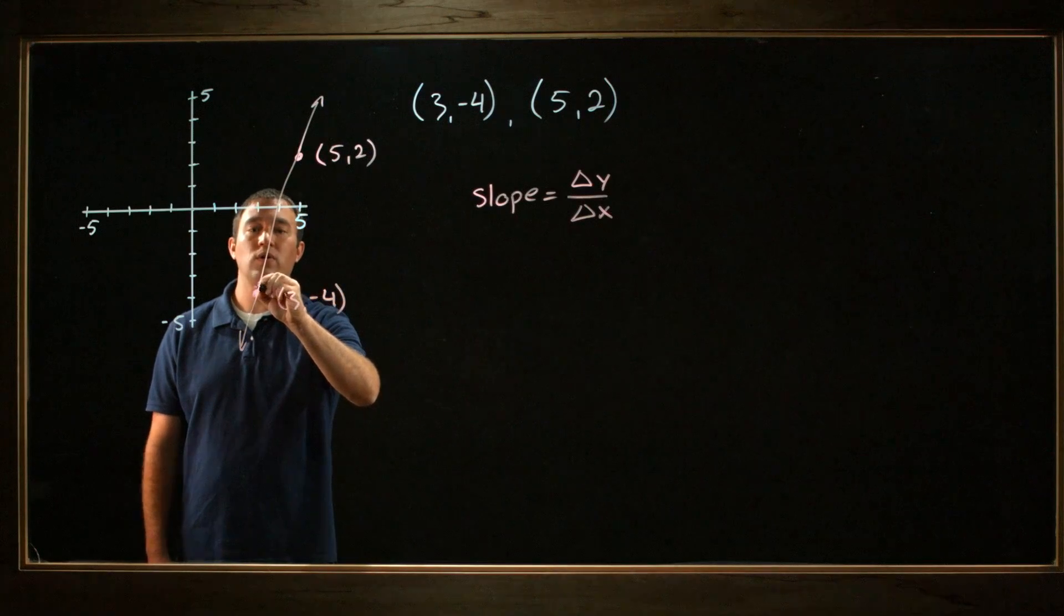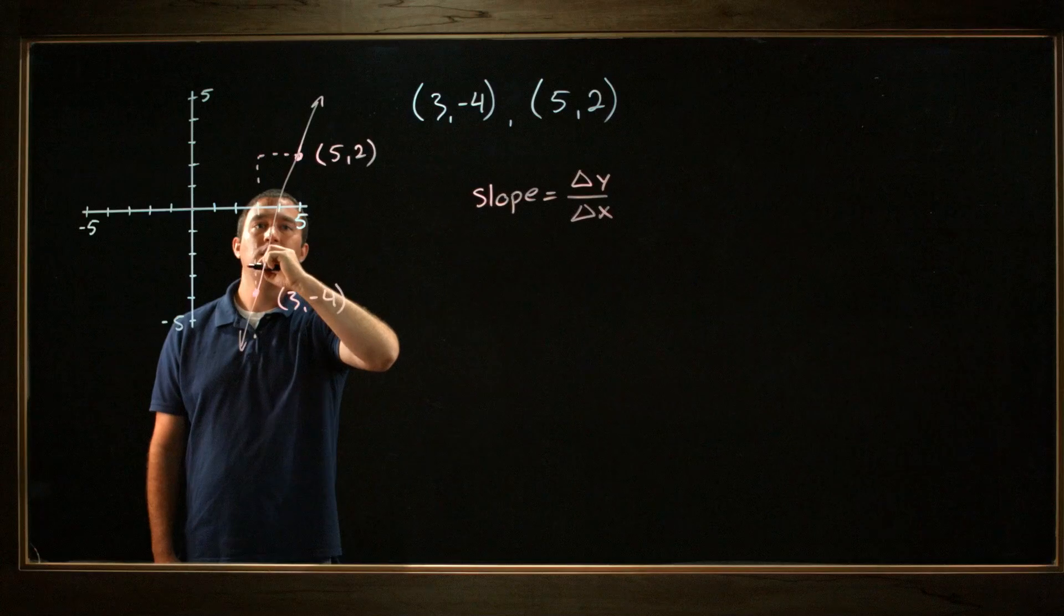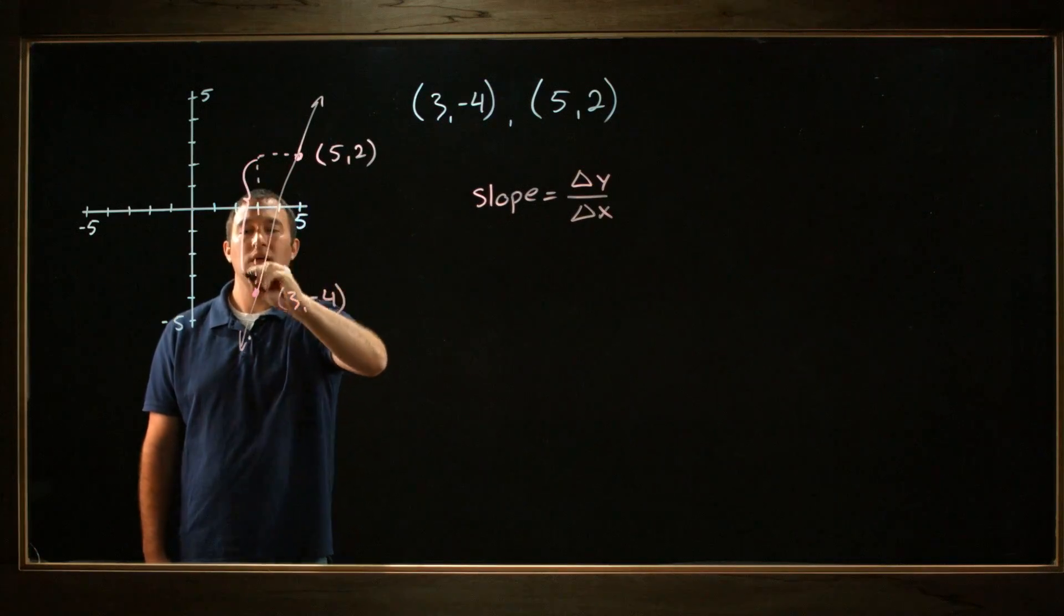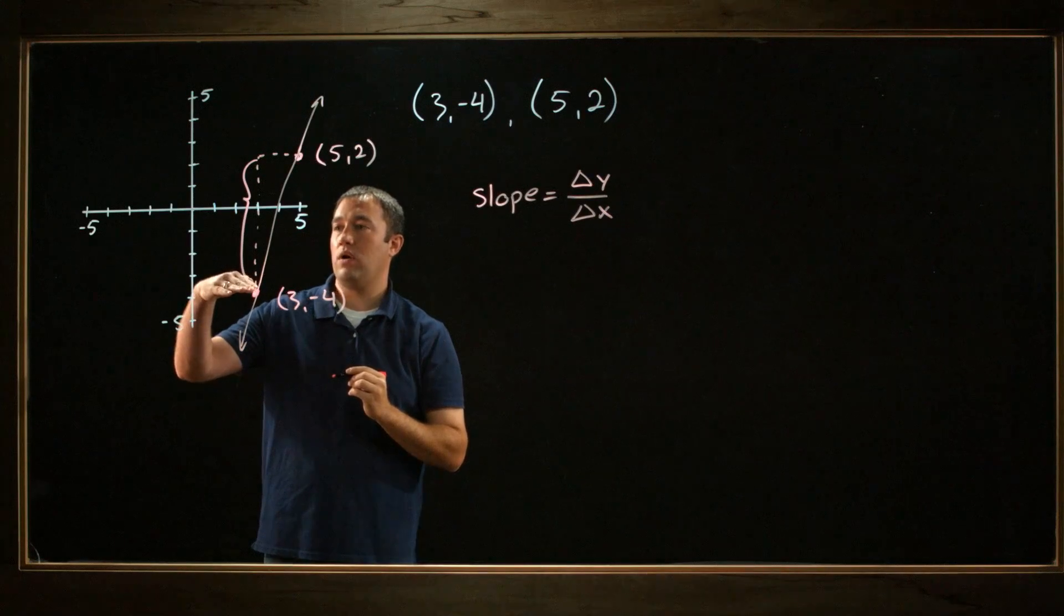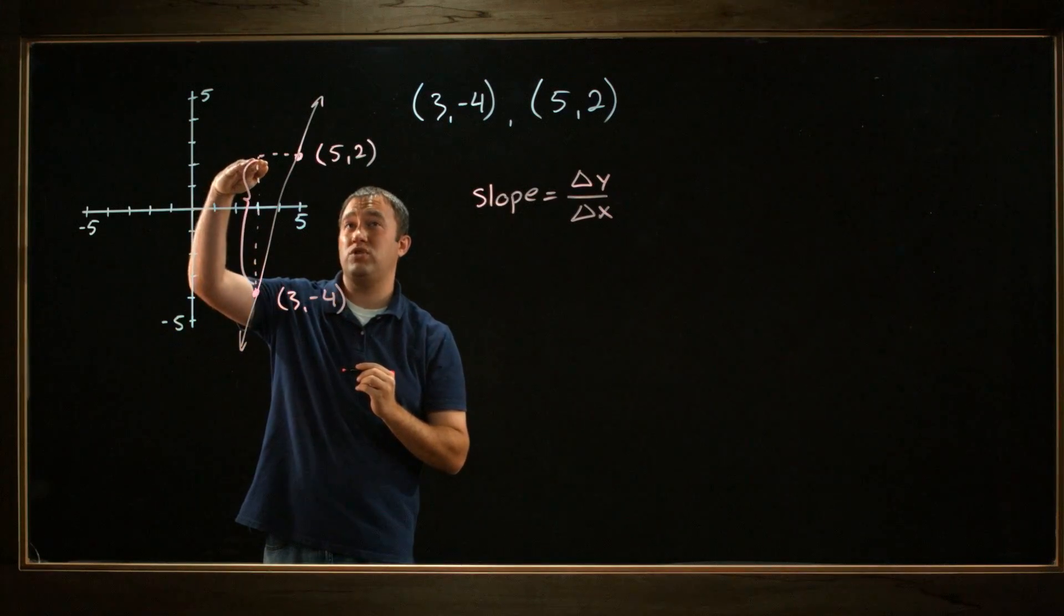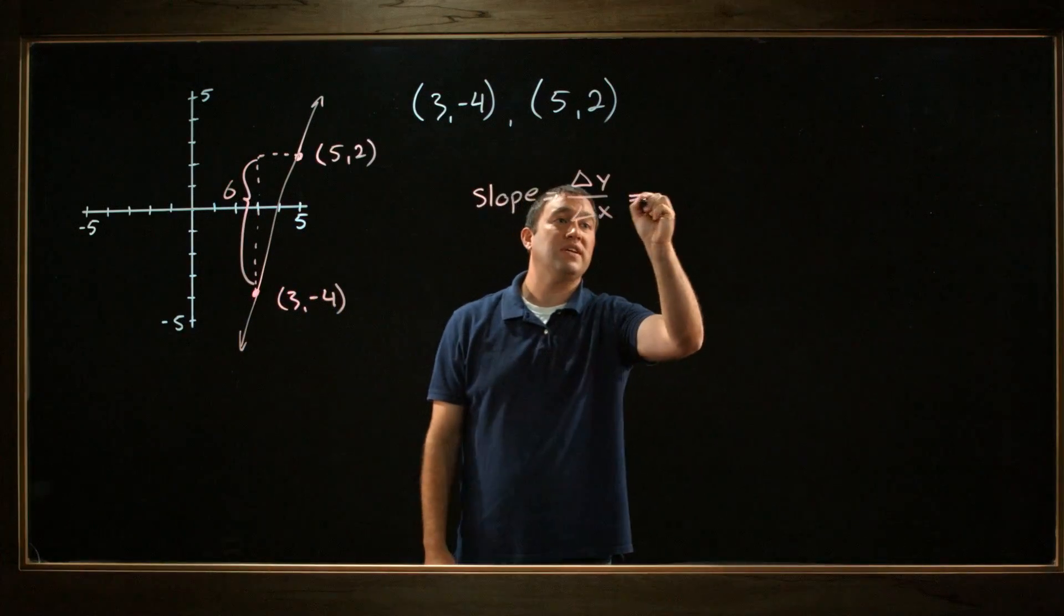So I can kind of draw this little triangle right here. And I can see, well, the change in y—how much did it change in the y direction? It went down to -4 and up to 2. Well, that distance is 6. So the change in y must be 6.